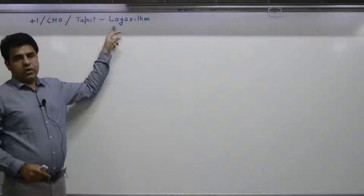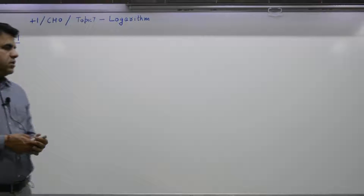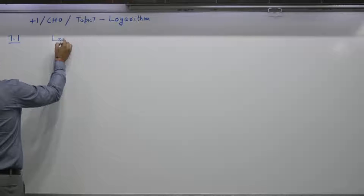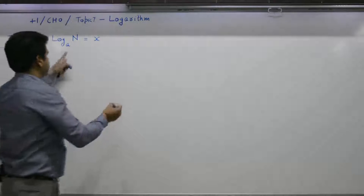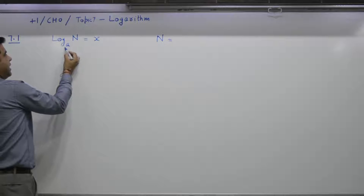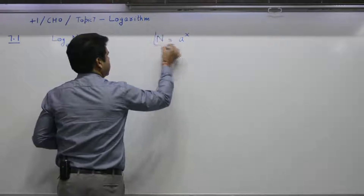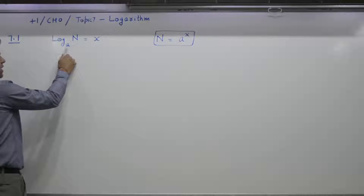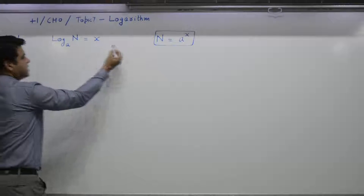Chapter 0, topic 7 deals with logarithms. Log is required in a number of chapters for solving certain numericals. The basic formula and concept for log is: log of n to the base a is equal to x, means n is equal to a to the power x. So log of a number n to the base a equals x means base a to the power x gives you n.